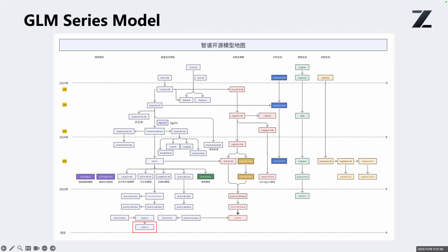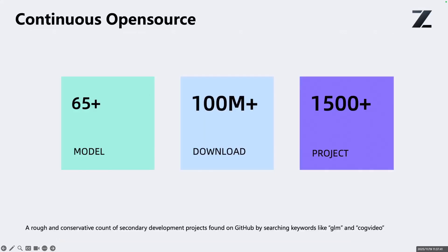So up to now, we have released over 65 models in total, and on platforms like Hugging Face, ModelScope, and others, we have already passed 100 million downloads. If you search for GLM or CogVideo on GitHub, you will find that 1,500 community projects are built on top of them, and it's very much a community-driven ecosystem now.